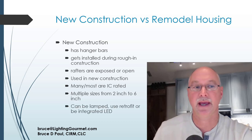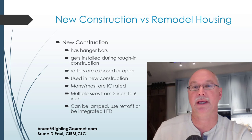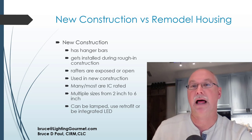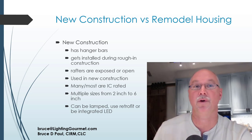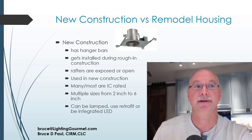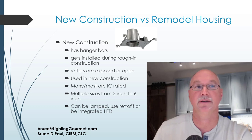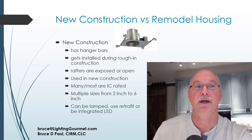New construction cans can be lamped, use retrofit trims, or be integrated LEDs. There are lots of different products within the category of a new construction can, and you want to understand what you're using and why before it gets installed. Here's an example of a new construction recessed housing that has hanger bars — they get nailed up to the rafters, and there's a body that holds the light bulb and the trim.